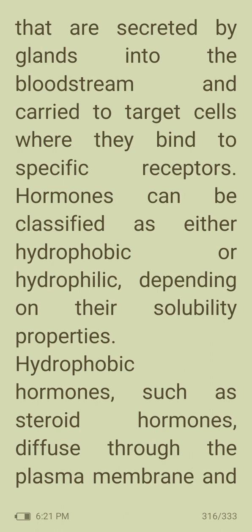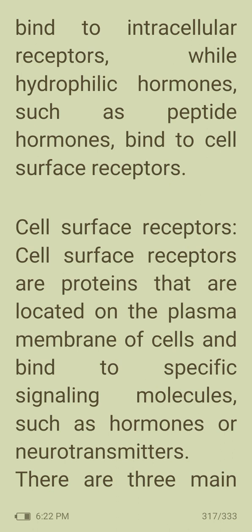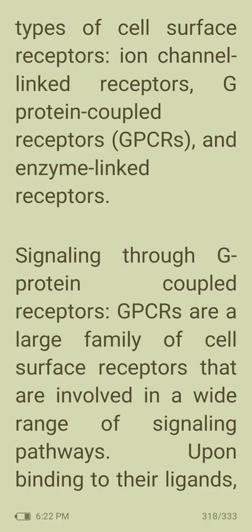Hormones can be classified as either hydrophobic or hydrophilic depending on their solubility. Hydrophobic hormones, such as steroid hormones, diffuse through the plasma membrane and bind to intracellular receptors, while hydrophilic hormones, such as peptide hormones, bind to cell surface receptors. There are three main types of cell surface receptors: ion channel-linked receptors, G protein-coupled receptors, and enzyme-linked receptors.